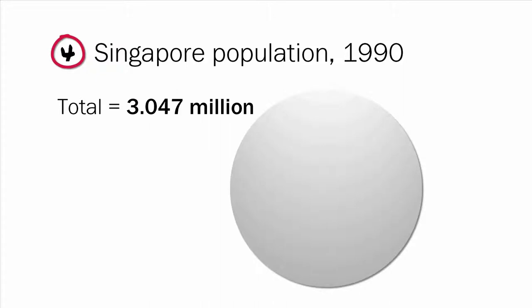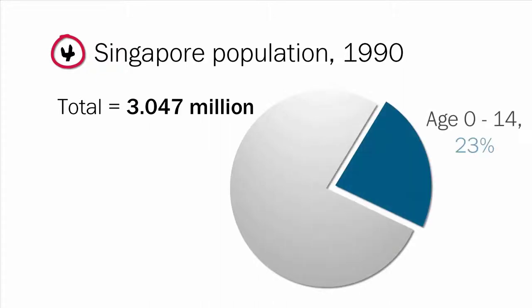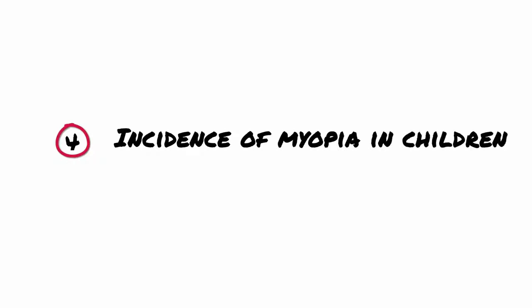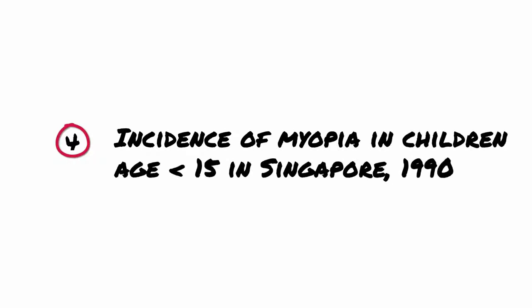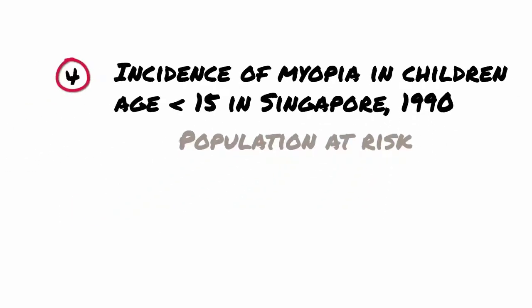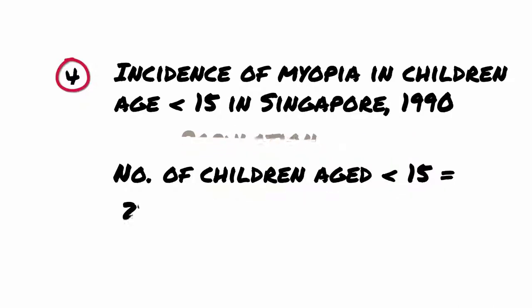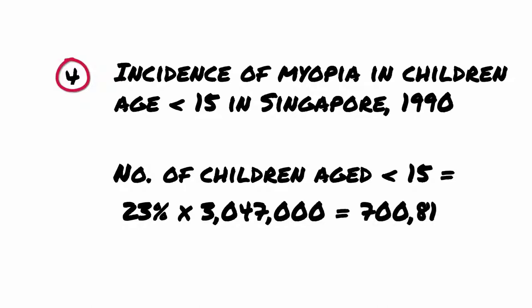Example 4. In 1990, the population of Singapore was 3.047 million and 23% were aged under 15. In this year, 12,300 new cases of myopia were registered in children aged under 15. Let's calculate the incidence of myopia in Singapore children in 1990. First, we have to calculate the population at risk, that is, the number of children aged under 15. This is 23% of 3.047 million, which comes to 700,810.